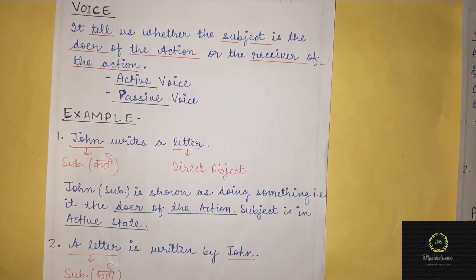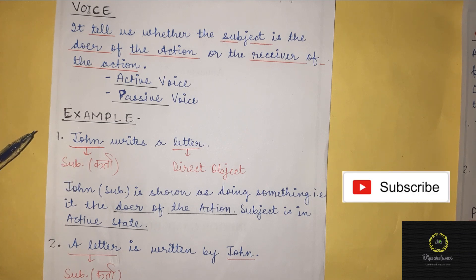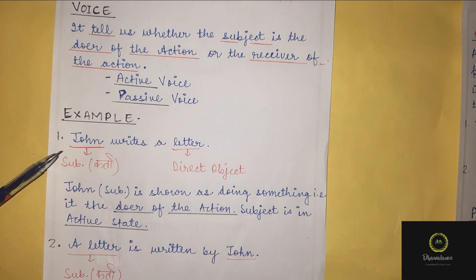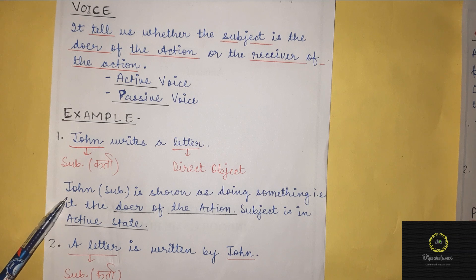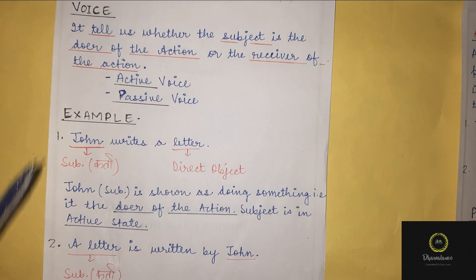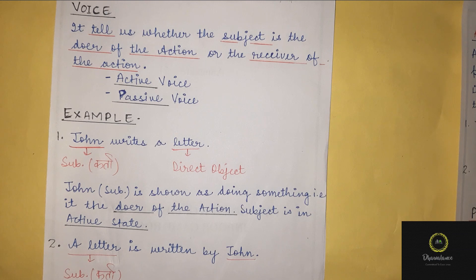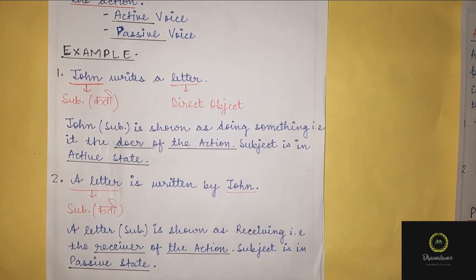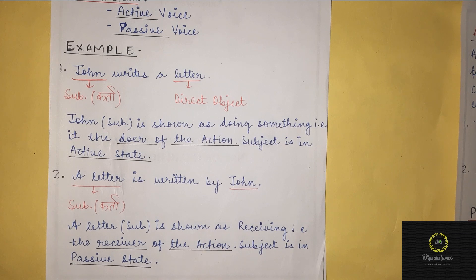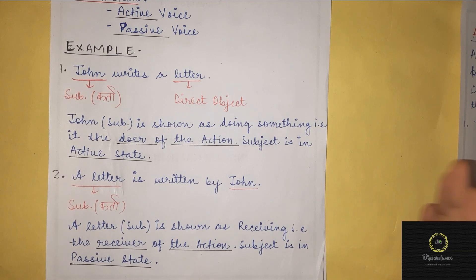Let's understand clearly with the help of an example. 'John writes the letter.' John is the subject — jise hindi mein hum karta kehte hain. John is shown as doing something, that is, he is the doer of the action. John is writing the letter here, so he is the doer of the action. That means the subject is in an active state.